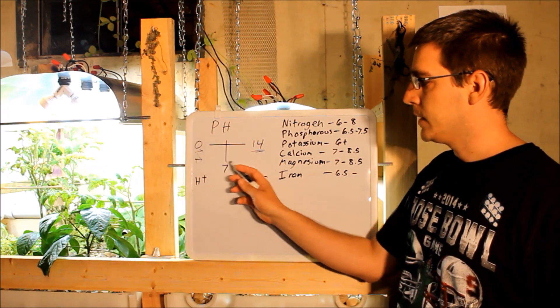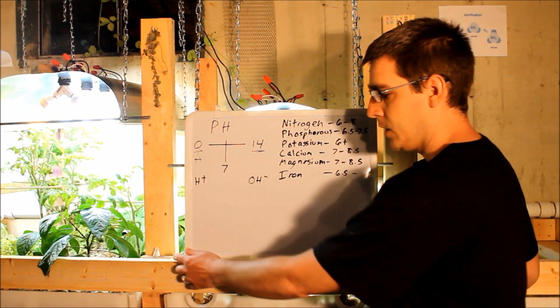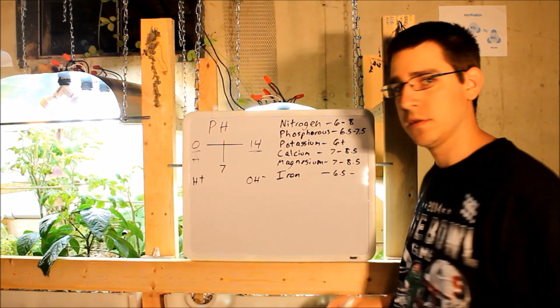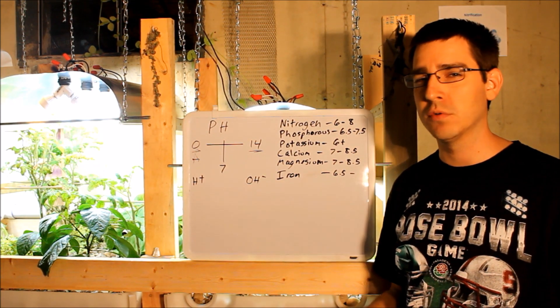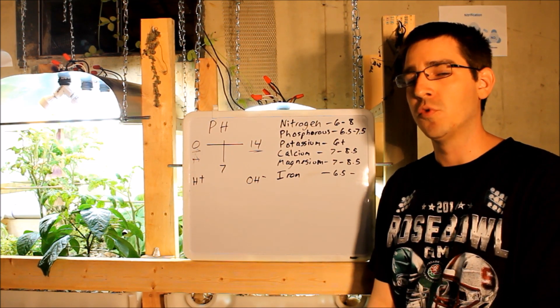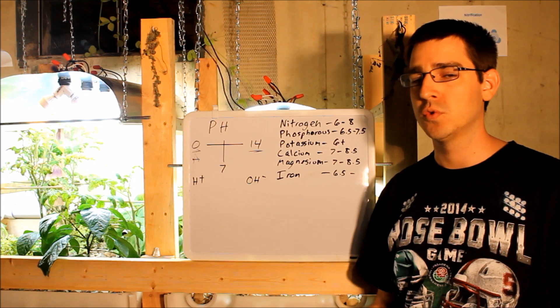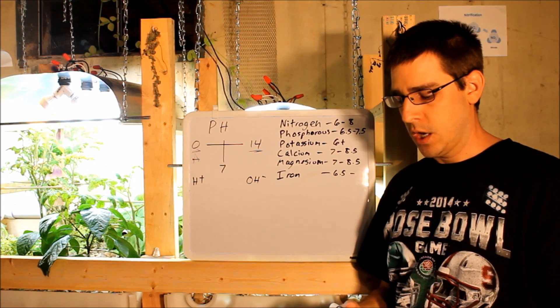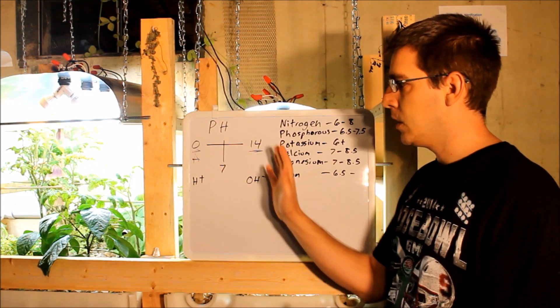Right here in the center, you've got 7. Anything with a pH of 7 is neutral. So that's something like distilled water. Tap water generally is actually a little bit more basic, more towards pH of 8, but distilled or filtered water could be closer to 7.